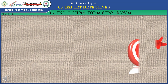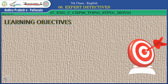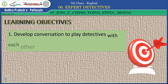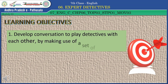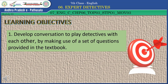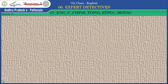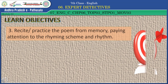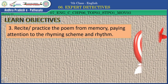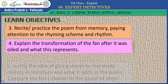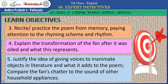Dear children, let's move on to the learning objectives now. By the end of the lesson, you will be able to: 1) Develop conversation to play detectives with each other by making use of a set of questions provided in the textbook. 2) Conduct a survey — study the questionnaire and discuss the points in groups. 3) Recite or practice the poem from memory, paying attention to the rhyming scheme and rhythm. 4) Explain the transformation of the fan after it was oiled and what this represents. 5) Justify the idea of giving voices to inanimate objects in literature and what it adds to the poem.